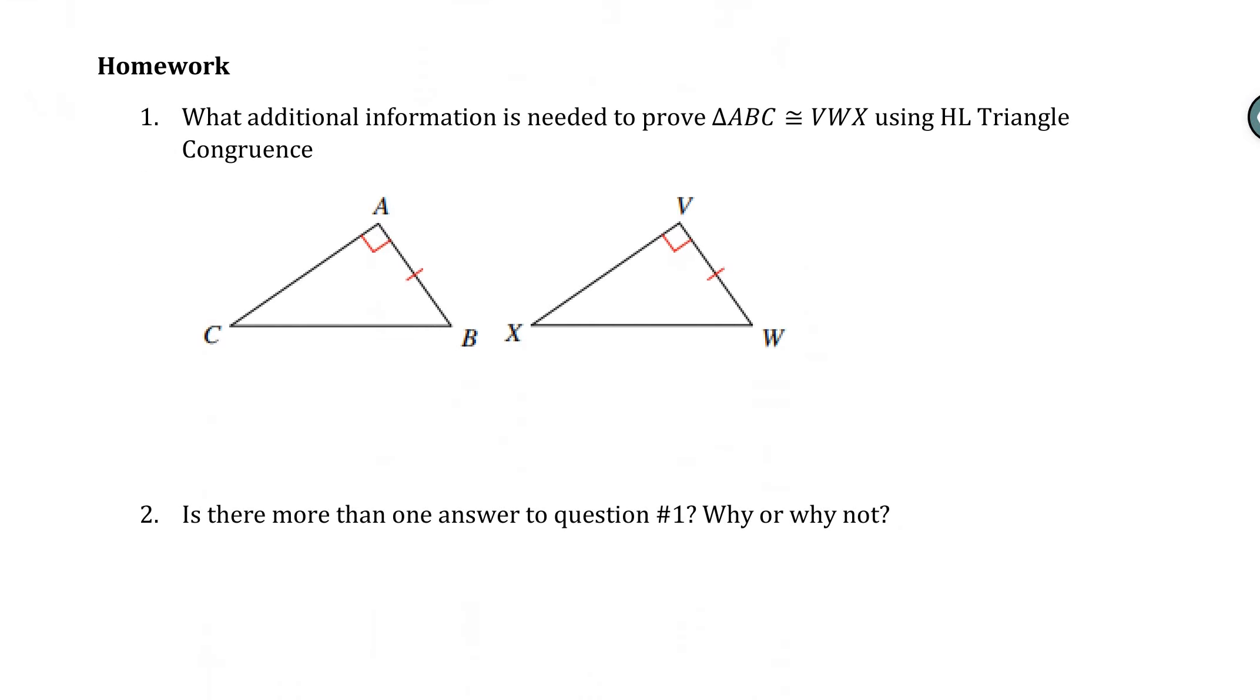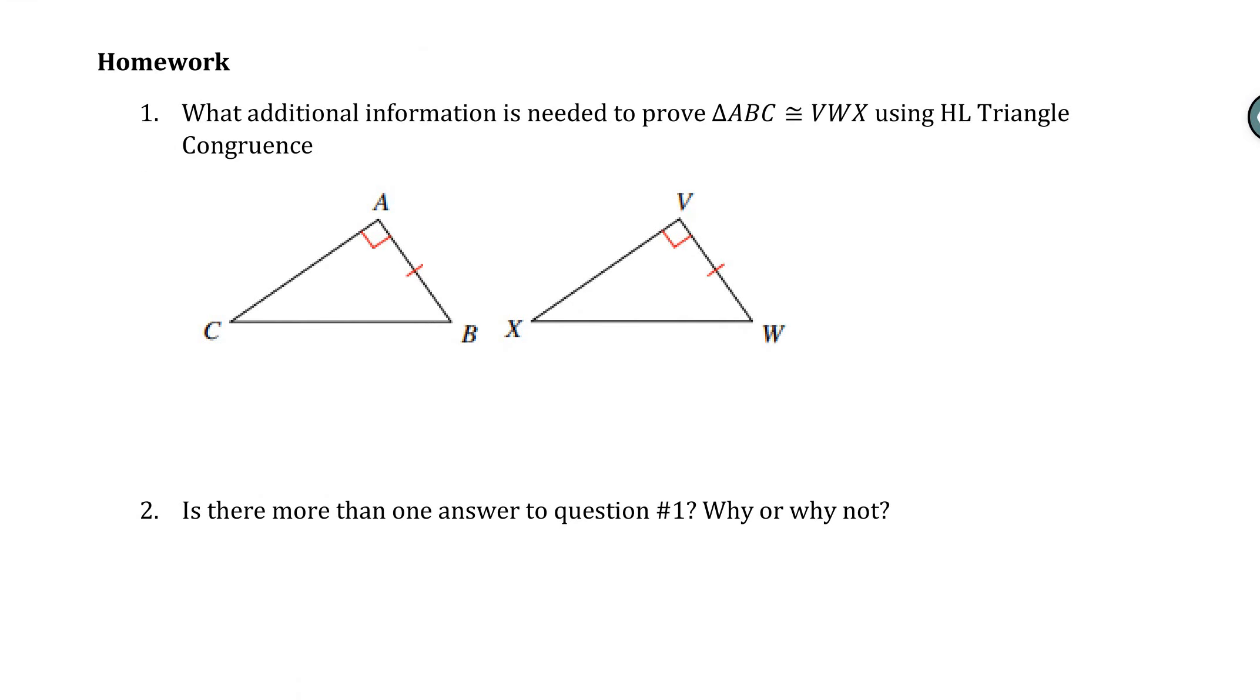All right, let's check out the homework. So for number one, it says, same question that we had in class. What additional information can be used to prove that these two triangles are congruent using hypotenuse leg? Right now, this is a leg that's labeled and a leg that's labeled. So we need the hypotenuse. So if I label the hypotenuse, I would have to say that BC is congruent to WX.